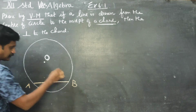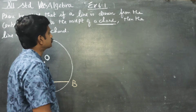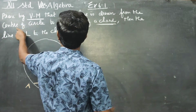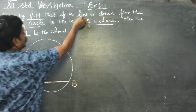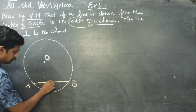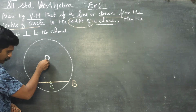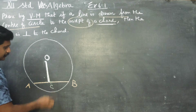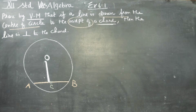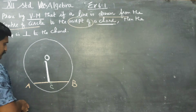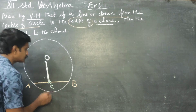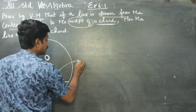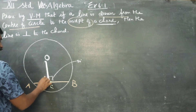Let AB be the chord. I am going to draw a line from the center of the circle to the midpoint of the chord. Let C be the midpoint of the chord. I have drawn a line from O to C. I have to prove that OC is perpendicular to AB — that is, the angle here is 90 degrees.